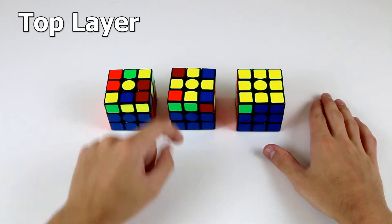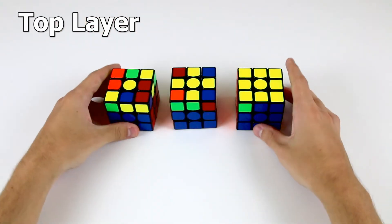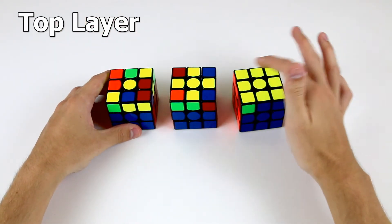We do this in two steps, by firstly orienting the edge pieces to make a cross, and then orienting our corner pieces on the top layer.